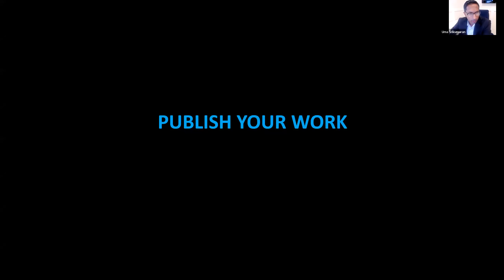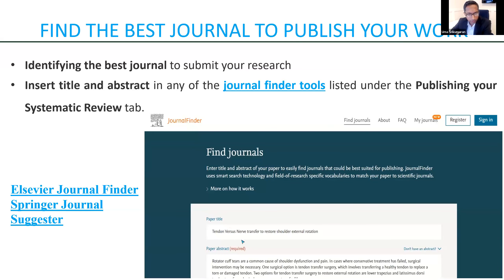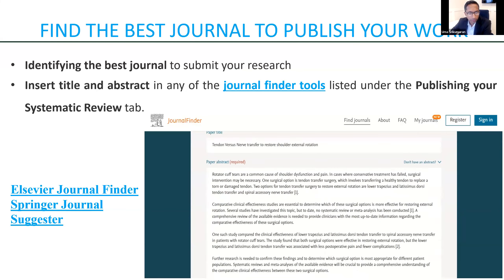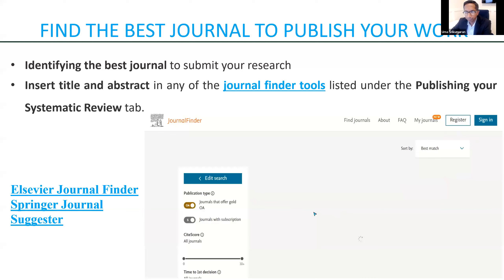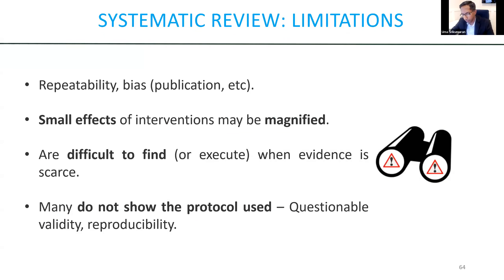Finally, looking to publish your work — there are tools for that as well. You can put your title and abstract into a journal finder and it'll give you suggestions about potential targets to submit to. There are some limitations, of course — it's only as good as what you include in it. If there are issues with repeatability and bias from the included studies, your systematic review can have the same issues. Small effects of interventions can be over-magnified, and it can be very difficult to do with very scarce topics. If the protocol is not noted, it can be very difficult to reproduce, and we really don't understand the bias that was or was not eliminated.